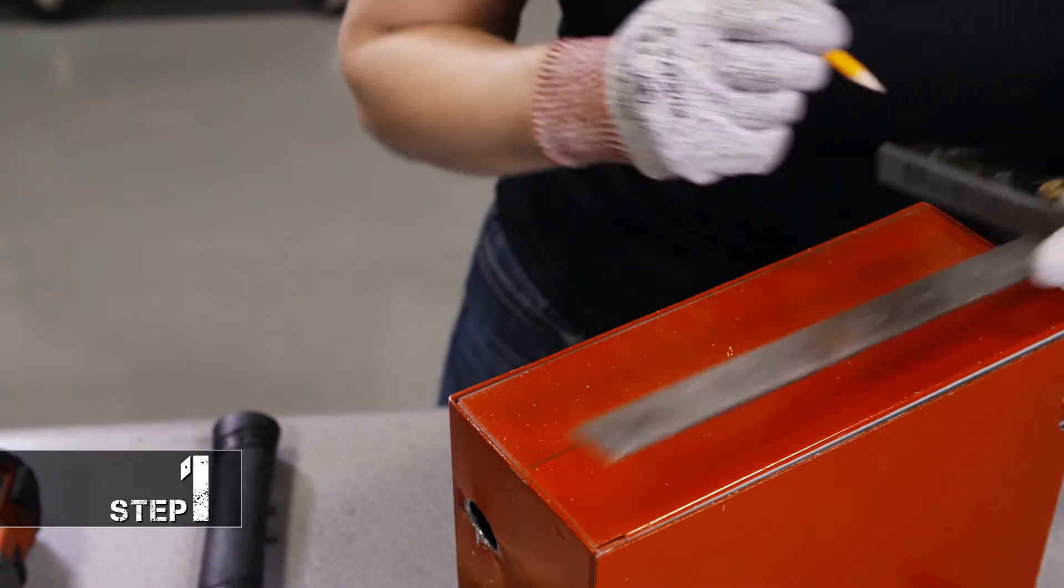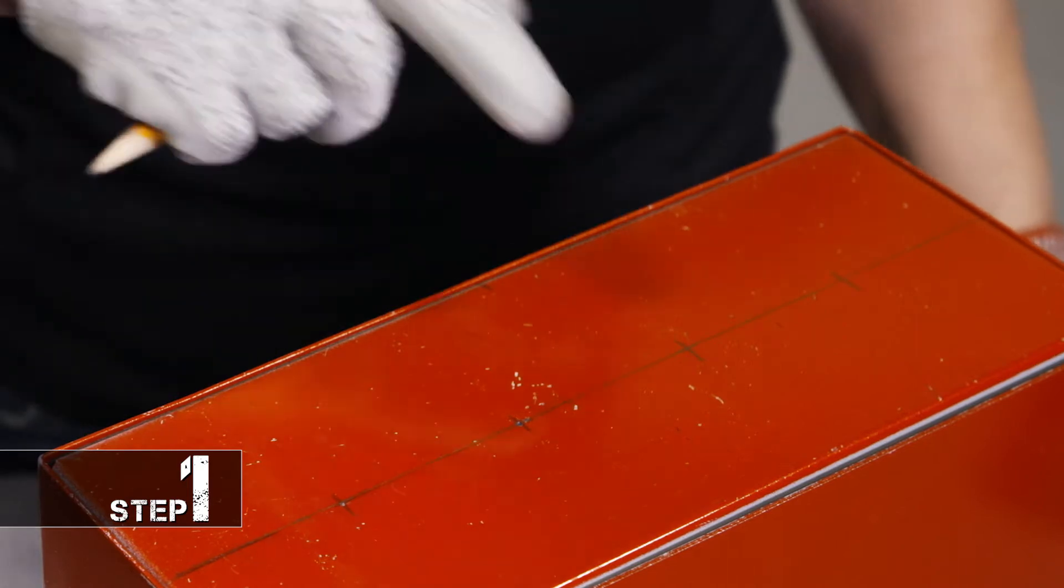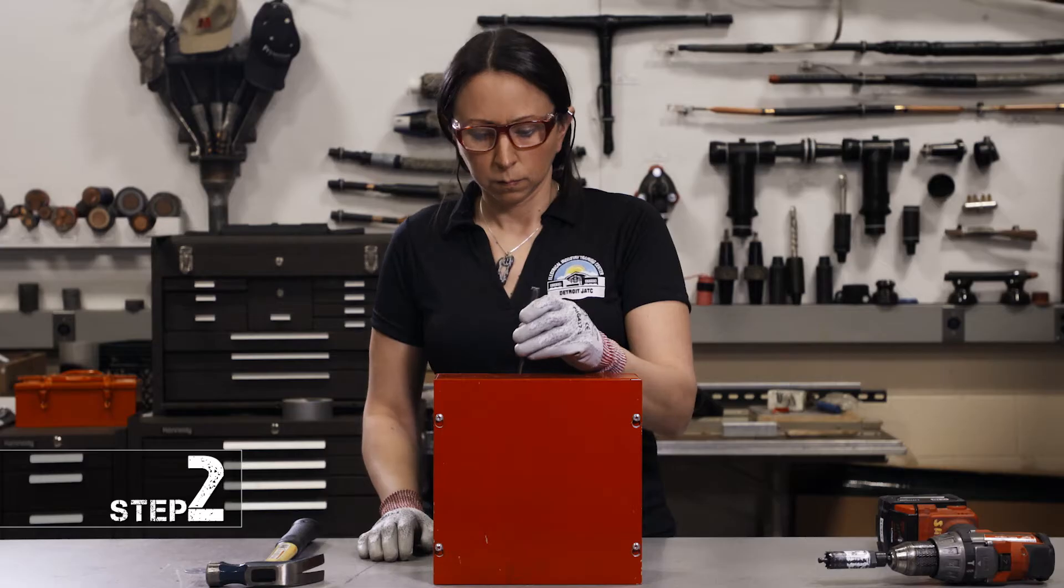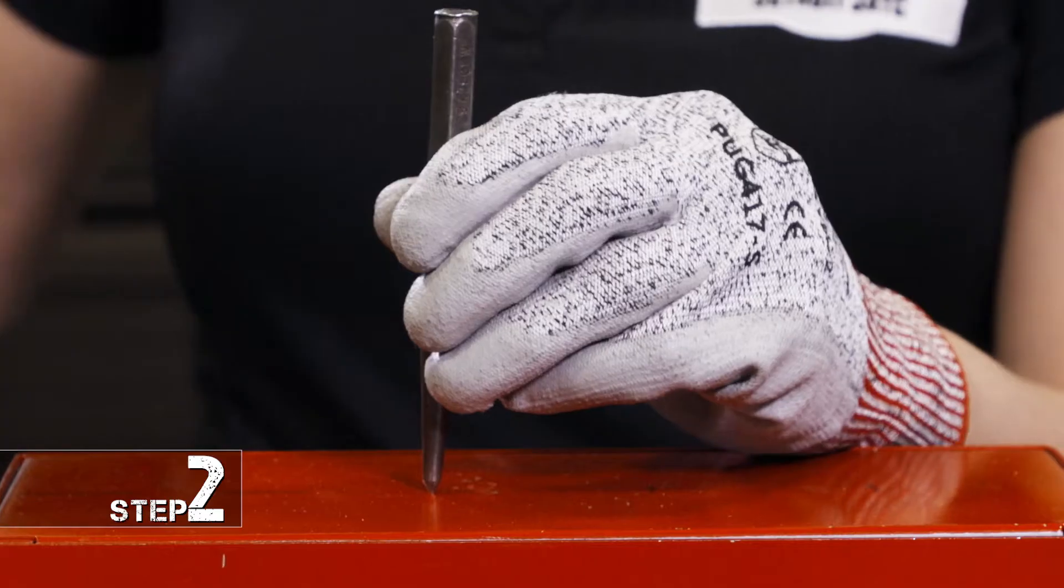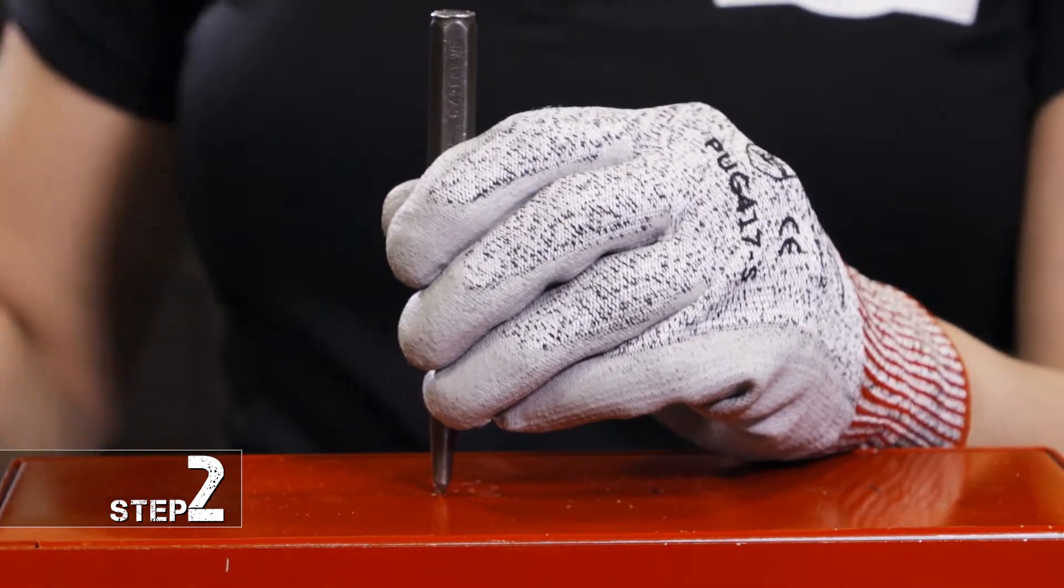So step one is you go ahead and lay out the marks on your junction box for the holes that you're going to drill. Step two, I'm going to center punch the marks that I made on the junction box.